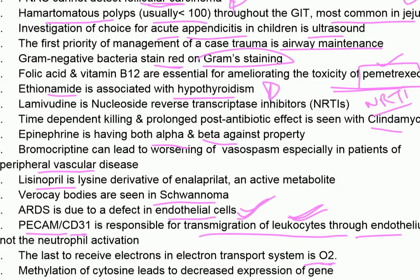The last to receive electrons in the electron transport chain is oxygen. Methylation of cytosine leads to decreased expression of the gene.